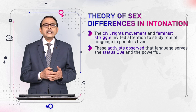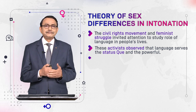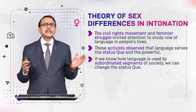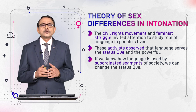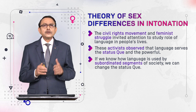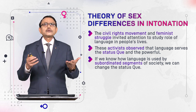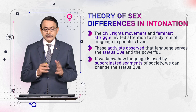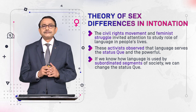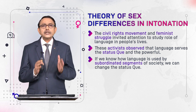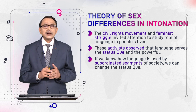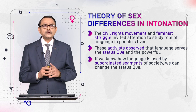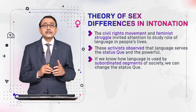If we know how language is used by subordinated segments of society — those people who are thought to be underprivileged, belonging to lower classes of society, the downtrodden, grassroots-level people — and we understand the language they use, this knowledge will help us to plan some strategy, to plan some research, to counter the status quo, to face the status quo, and to make efforts for social transformation.